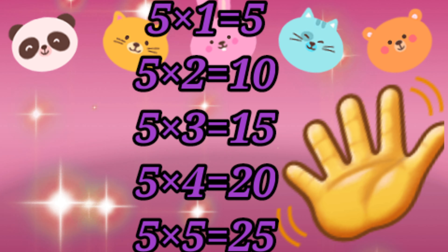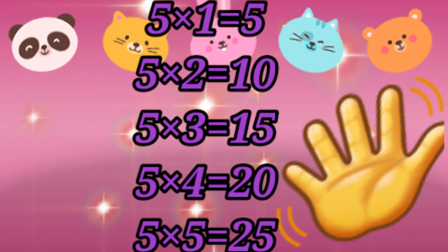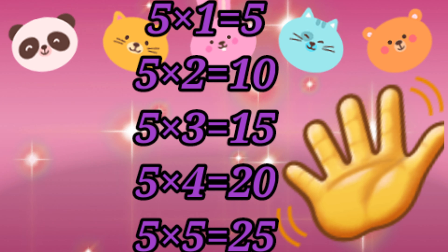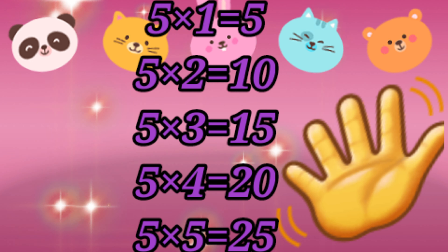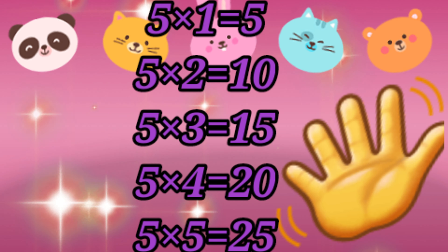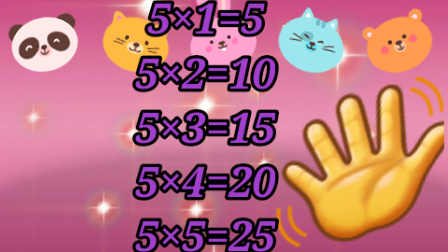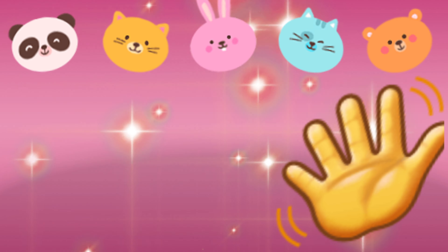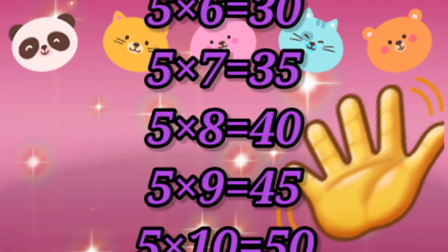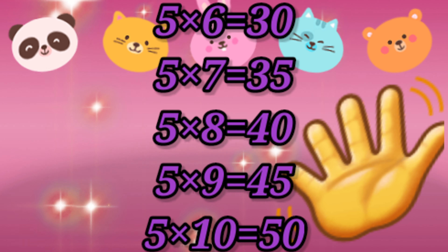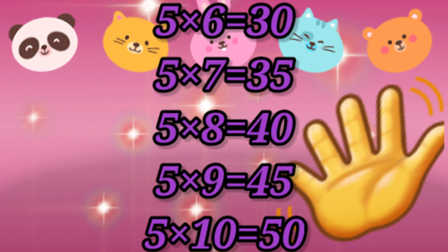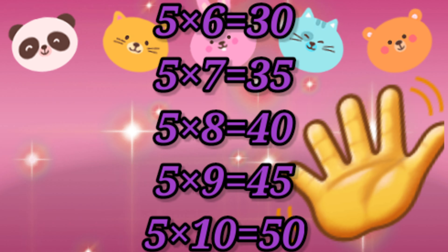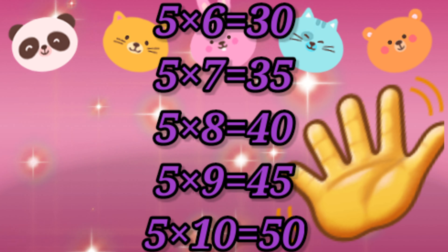Five, four's a twenty. Five, four's a twenty. Five, five's a twenty-five. Five, five's a twenty-five. Five, six's a thirty. Five, six's a thirty. Five, seven's a thirty-five.